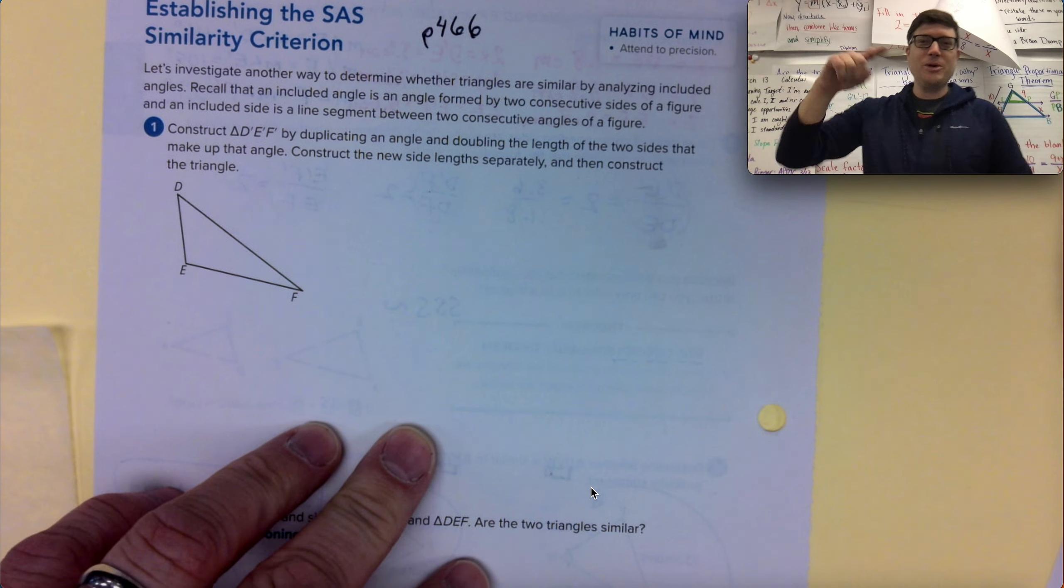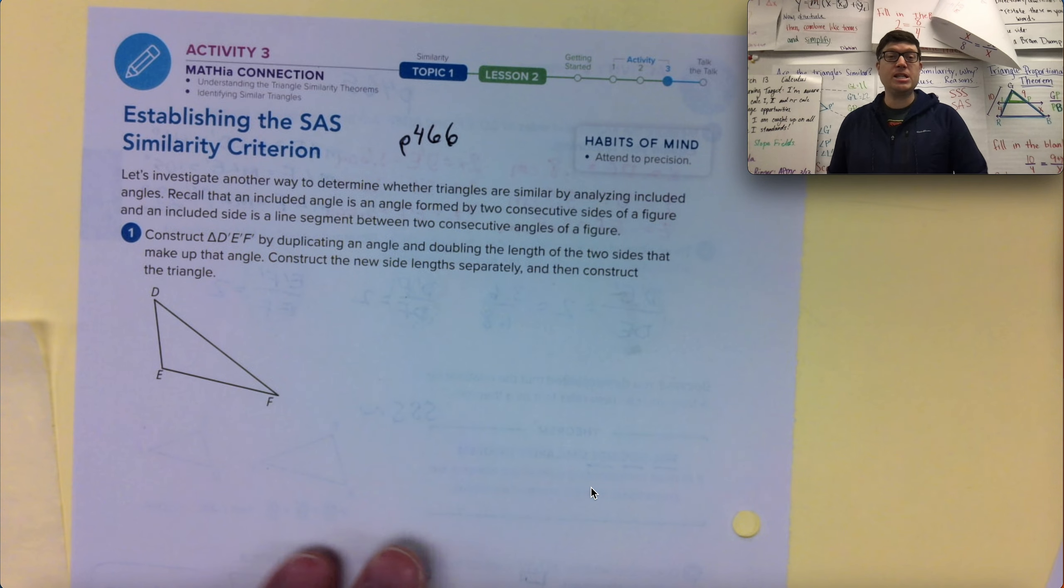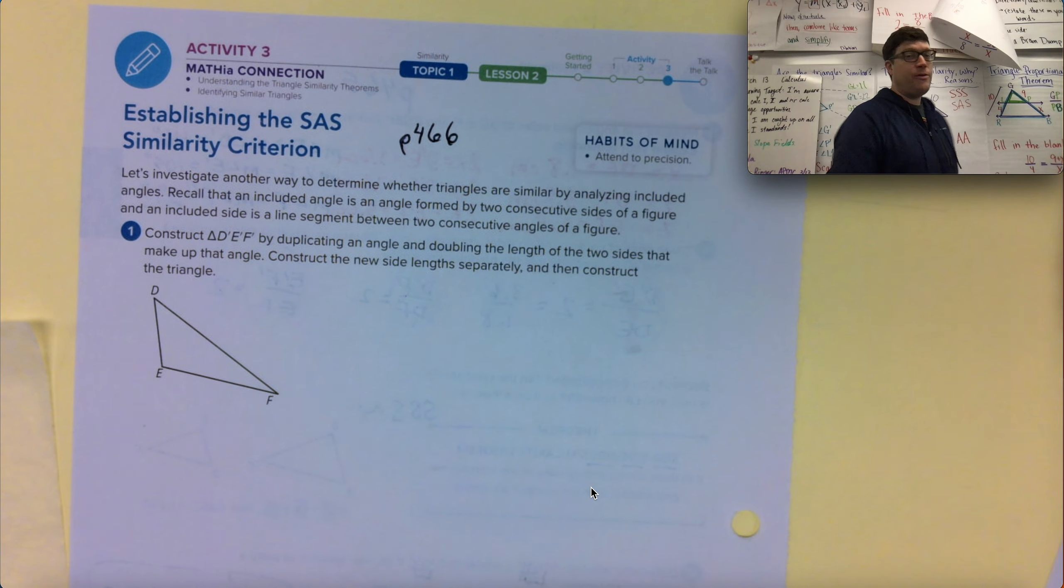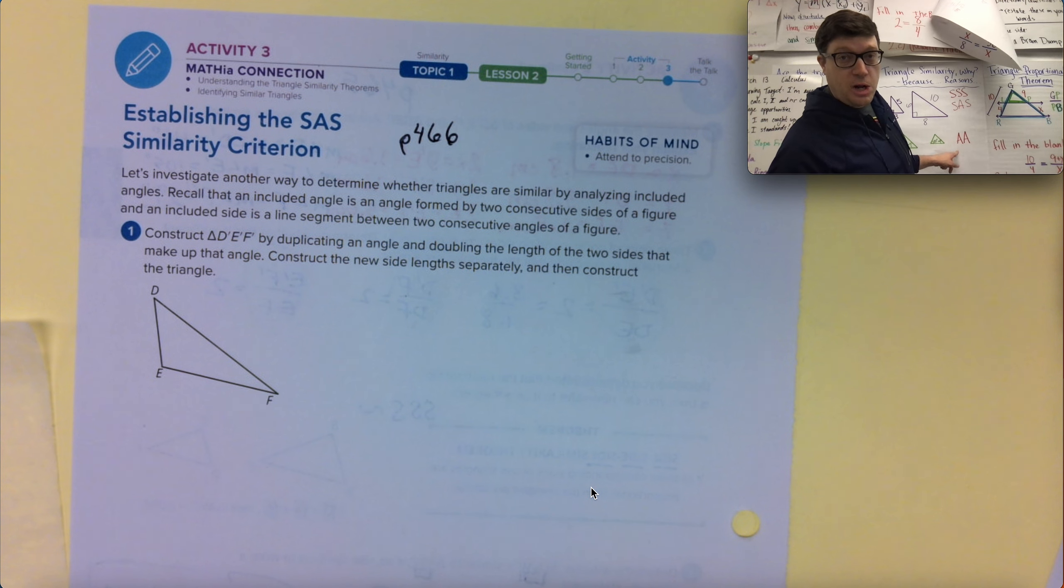Get it together. Module 3, Topic 1, Lesson 2, and we're specifically talking Activity 3, the last activity out of this lesson, because in the previous activities we figured out that angle-angle was one of the triangle similarity shortcuts. Side-side-side was a second triangle similarity shortcut.